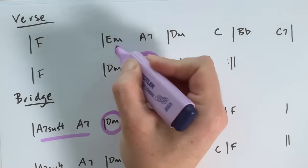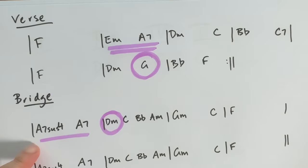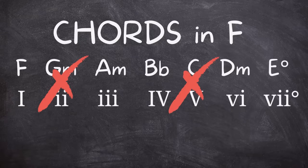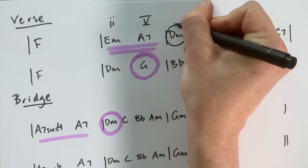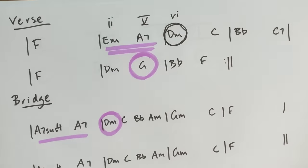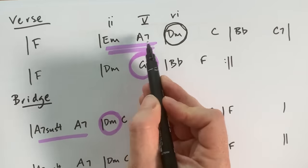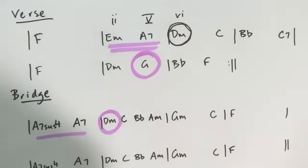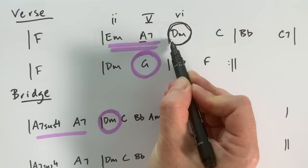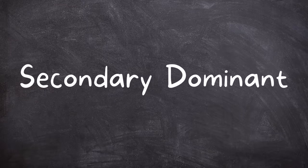You're going to see this happening right at the beginning of the verse section. This is called a 2-5, but what is it a 2-5 of? It's not actually the II chord or the V chord of the key of F — this little chord combo is targeting a different chord in the key of F. In this case it's targeting D minor, our VI chord. The A dominant 7 chord here is not the V of F; it is the V of D minor, meaning A is a perfect 5th above D. So it's the dominant chord of the VI. Its sole purpose is to create a little moment of lift that falls back to the D.